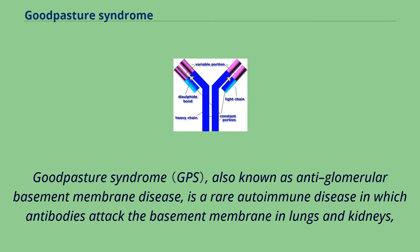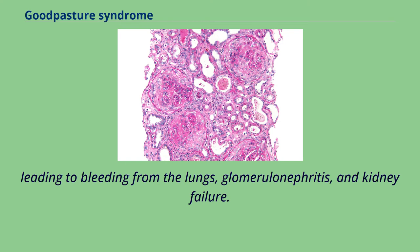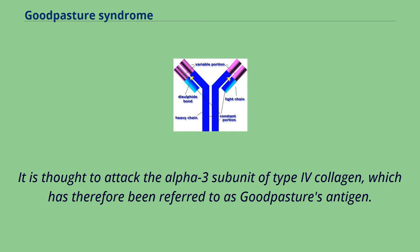Goodpasture syndrome, also known as anti-glomerular basement membrane disease, is a rare autoimmune disease in which antibodies attack the basement membrane in lungs and kidneys, leading to bleeding from the lungs, glomerulonephritis, and kidney failure. It is thought to attack the alpha-3 subunit of type 4 collagen, which has therefore been referred to as Goodpasture's antigen.